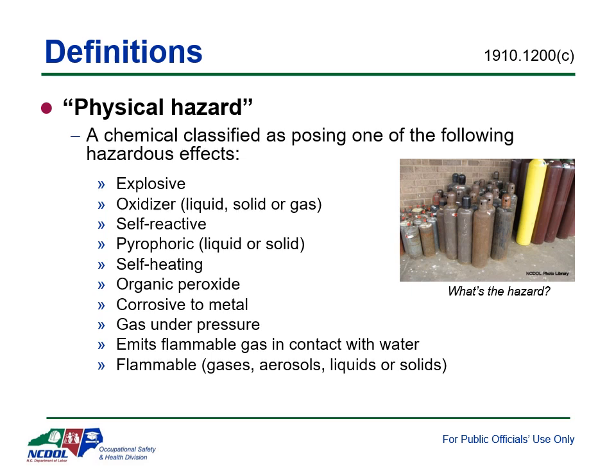Corrosive materials can damage metal surfaces by eating away at materials and causing them to break down. Gases under pressure contain gases that can explode or burst when heated, leading to serious or fatal injuries. Some examples you might see are aerosol cans, propane tanks, butane lighters, and oxygen tanks. Further definitions and descriptions of these categories can be found in mandatory Appendix B of the standard.